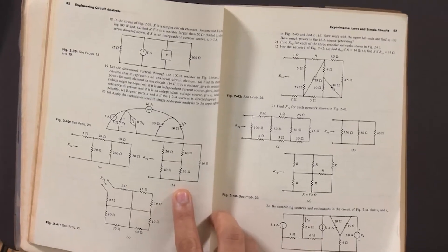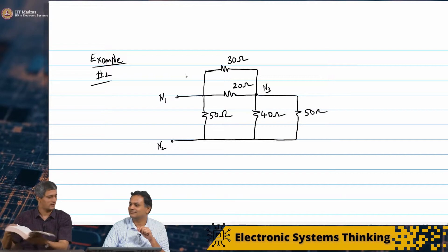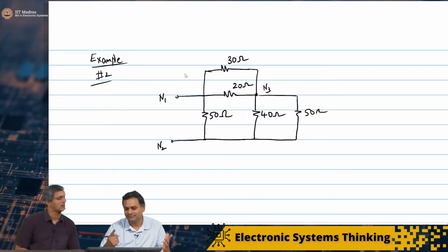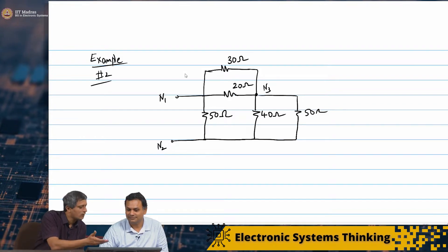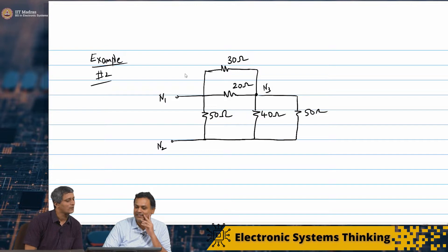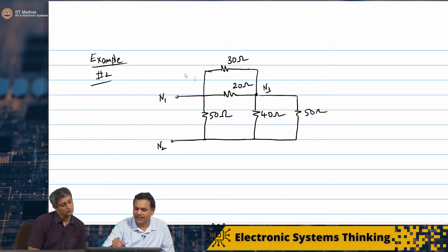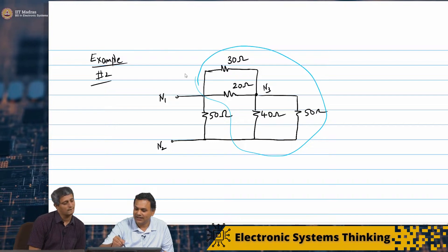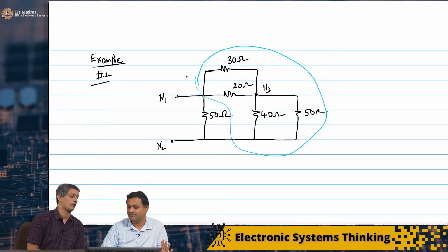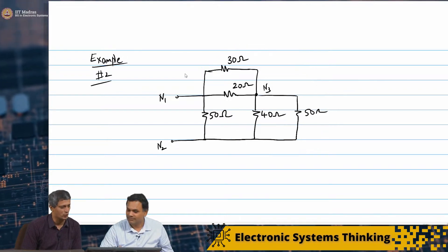Really it does not matter — we need to be able to solve this however it is drawn. Maybe can we start with a guess before we even get into this problem? I can already see that all of these are in parallel with 50 ohms, so the answer has to be less than 50 ohms.